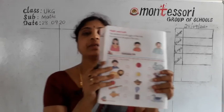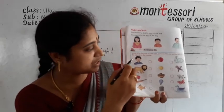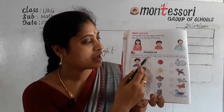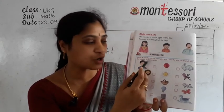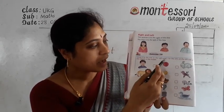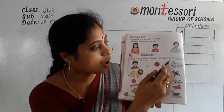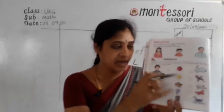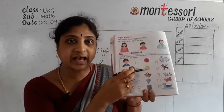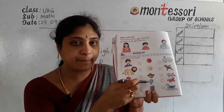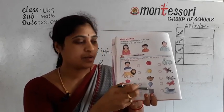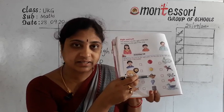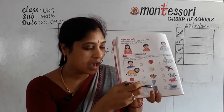Exercise 14. Write R for the one on the right and L for the one on the left side. The objects in the middle are: ball, sun, basket, balloon, and box.